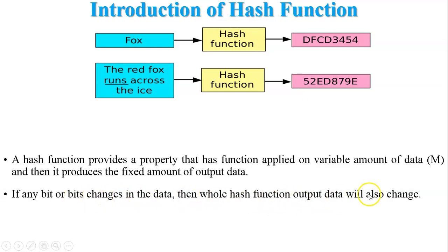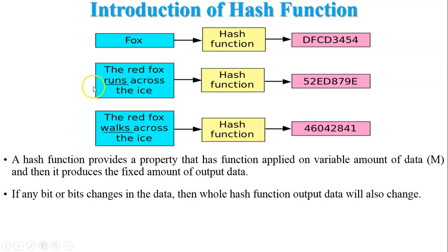Another property: if any bit or bits change in the data, the entire hash function output will also change. For example, 'the red fox runs across the eyes' and 'the red fox walks across the eyes' — generating the hash values of both input messages shows they are different. So if there is any change in the bits, the whole hash function output data will also change.